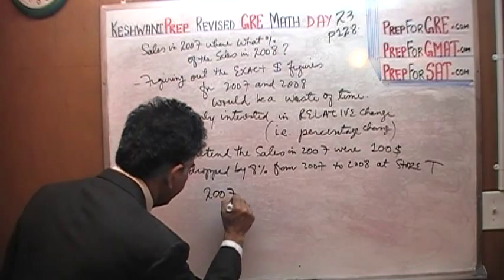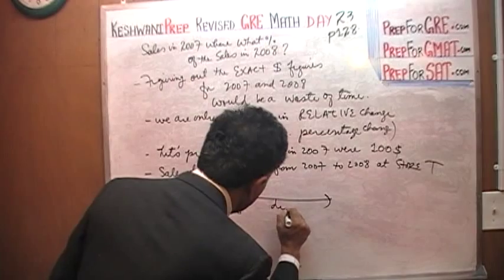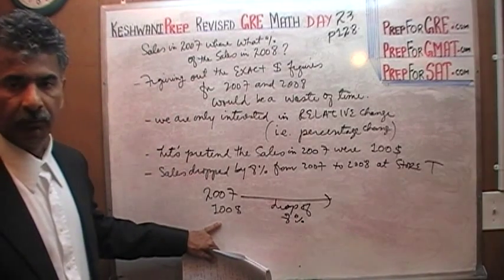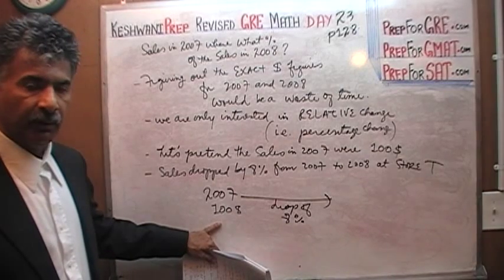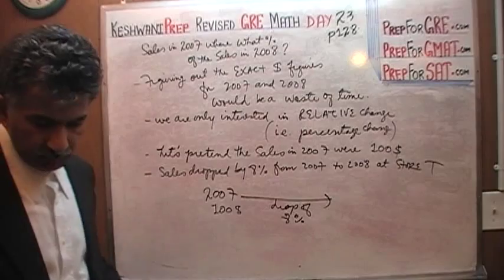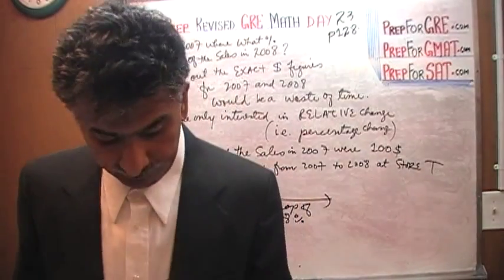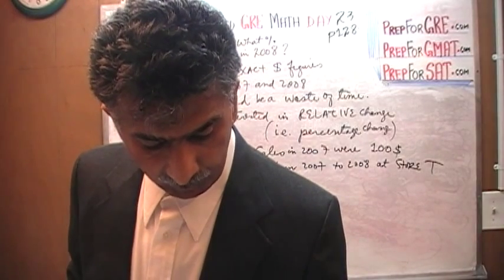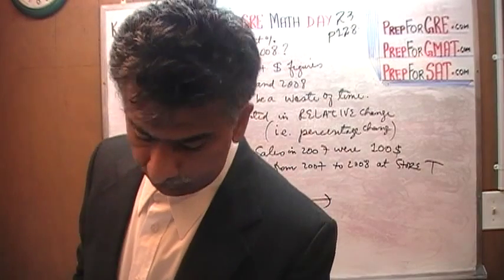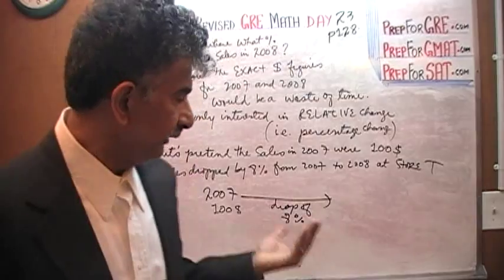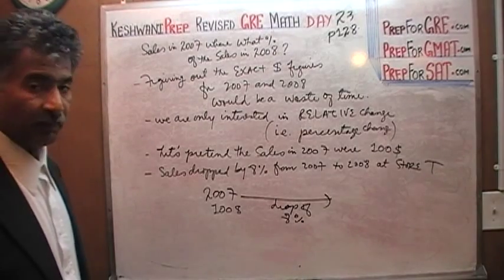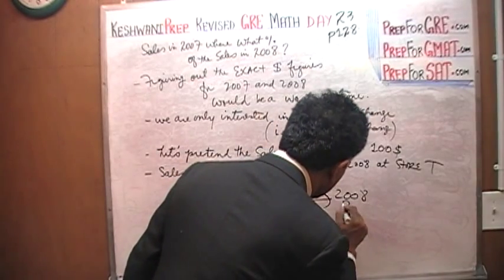So if we pretend that 2007 is 100 dollars, we are looking at a drop of 8%. What is 8% of 100? That is 8 dollars — that was the whole point of plugging in 100. There are no dollar figures given to us at all, so this is the only way. In 2007 it is $100, a drop of 8% represents $8, so in 2008 it becomes 92 dollars.